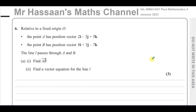This question is all about vectors. It says relative to a fixed origin O, the point A has position vector 2i minus 3j plus 5k. The point B has position vector 8i plus 3j minus 7k. The line L passes through A and B. So we have to find first the vector A to B and then a vector equation for the line.